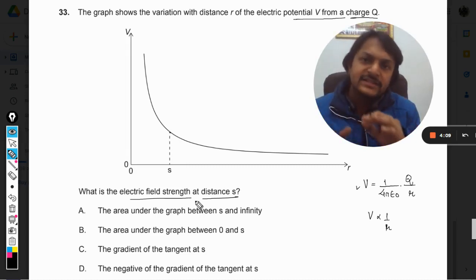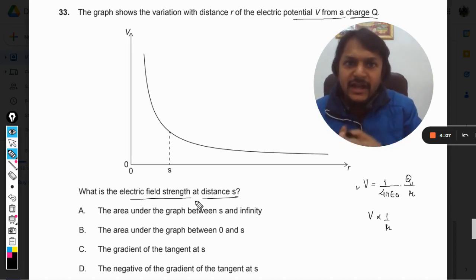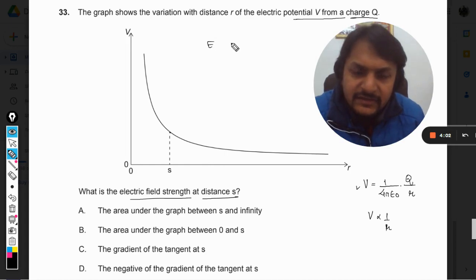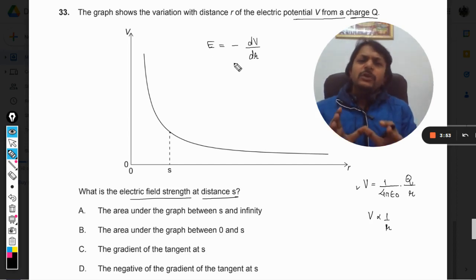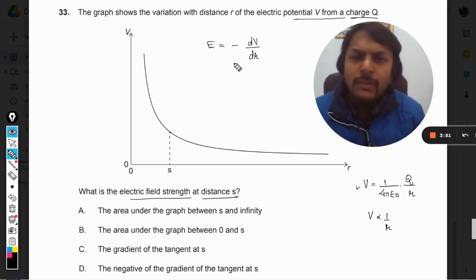There is a relationship between electric field and the potential and they are related like this: E is equal to negative dV by dr. So this formula is given in our books and you might be knowing this thing.